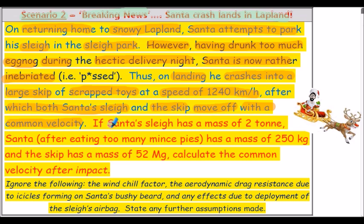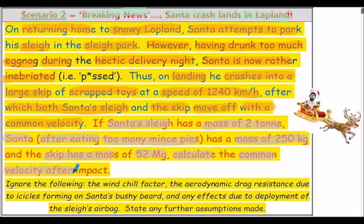If Santa's sleigh has a mass of 2 tonnes, Santa — after eating too many mince pies — has a mass of 250 kilograms, and the skip has a mass of 52 megagrams, we've got to calculate the common velocity after impact. In scenario two we need to apply the conservation of linear momentum, as reviewed in previous presentations. You can state any further assumptions made in your calculations. I would encourage you to pause the presentation and attempt scenario two.